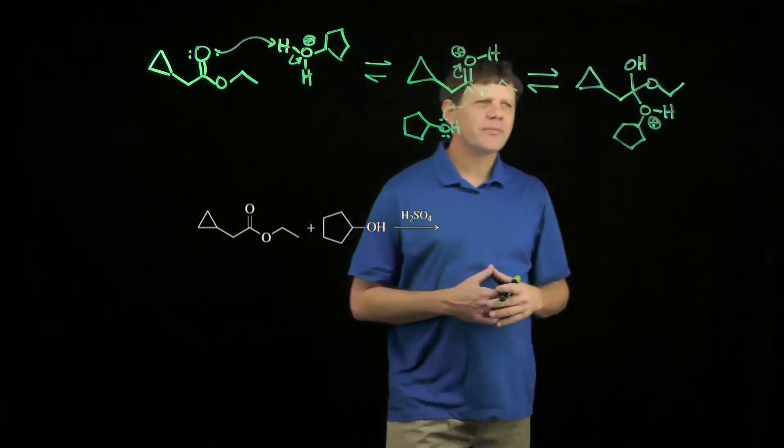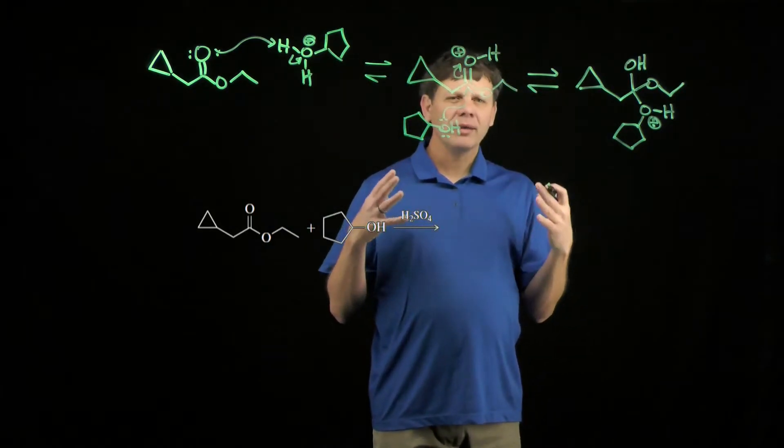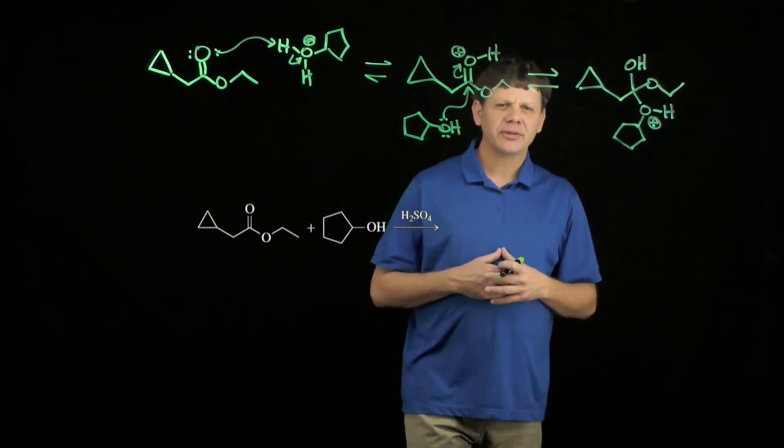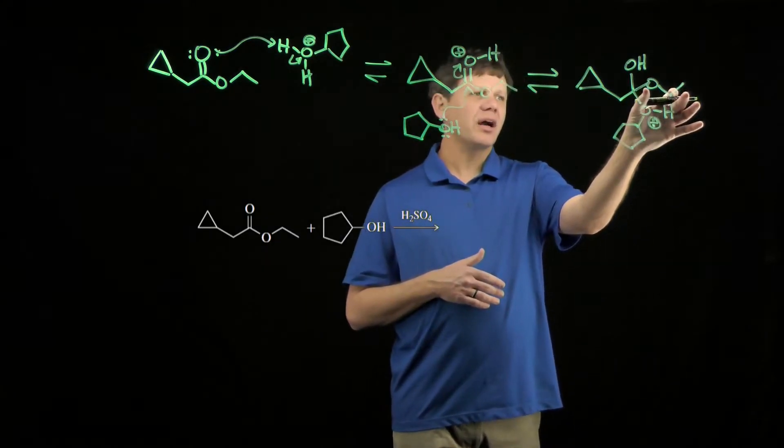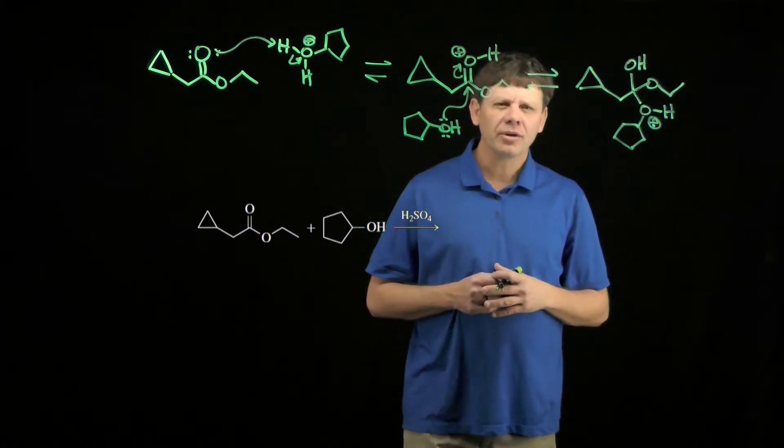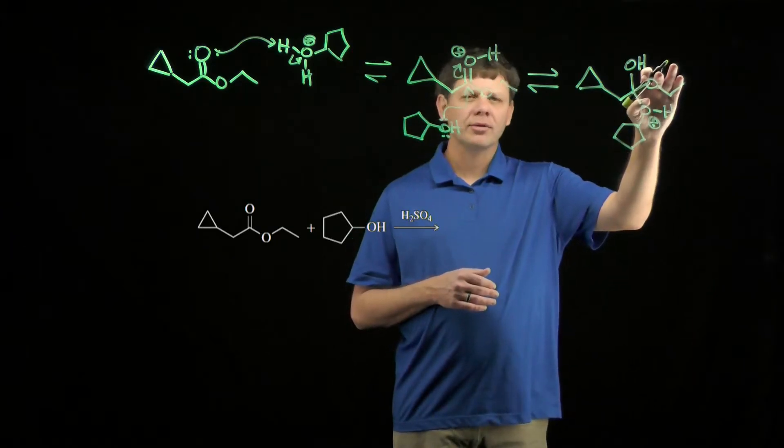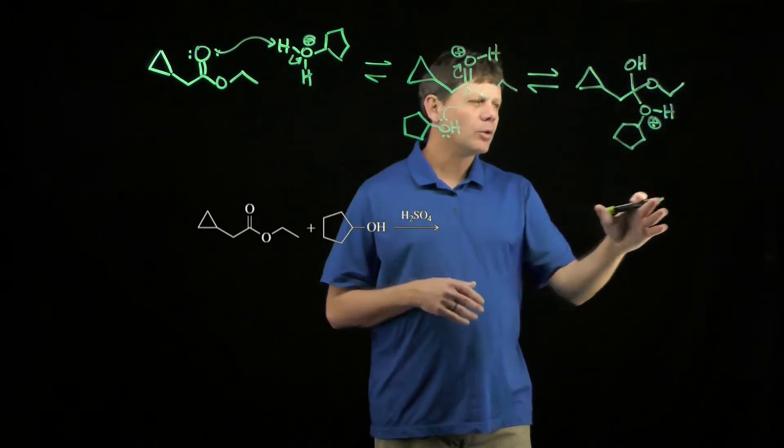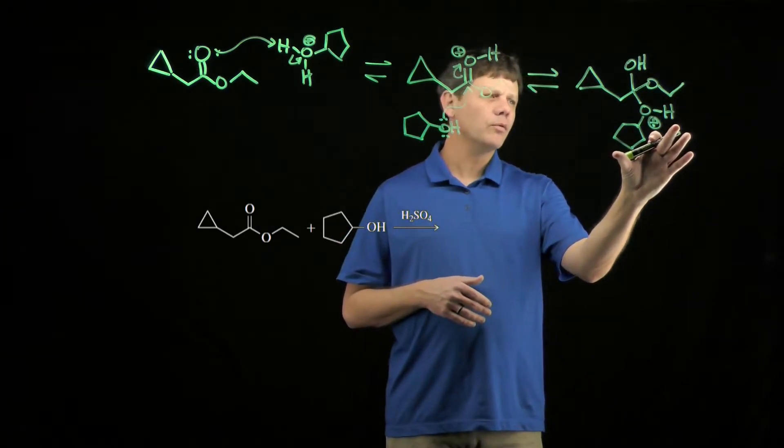Now, if we look at what we've made here, we know that we're doing a transesterification, so we need to get this ethoxy group to leave. In order to make it leave, we're going to want to protonate it. In order to protonate it first, we have to remove the proton here.